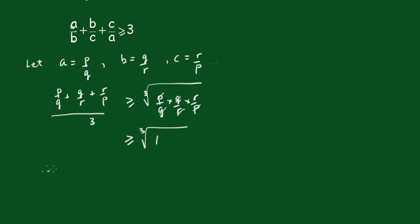Therefore, p/q + q/r + r/p is greater than or equal to, multiplying both sides by 3, 3. Obviously, we can just replace these with a's, b's, and c's, so they're just variables. Therefore, we can say finally that a/b + b/c + c/a is greater than or equal to 3.